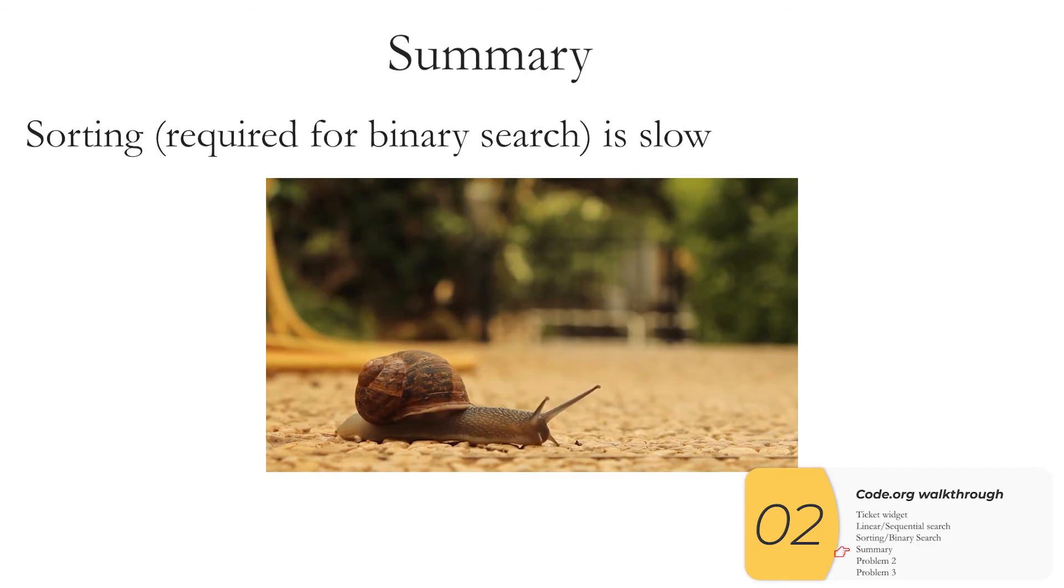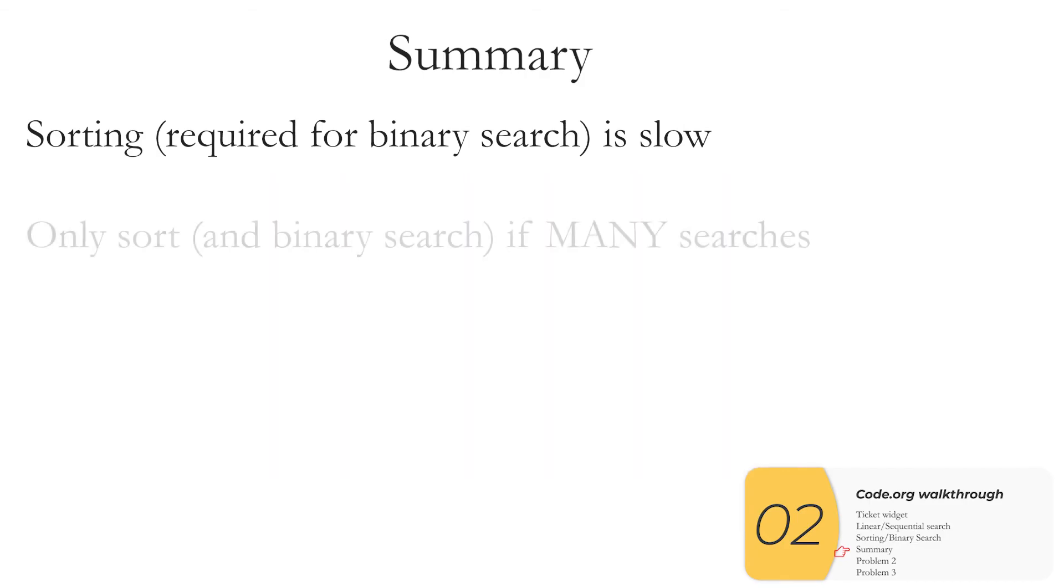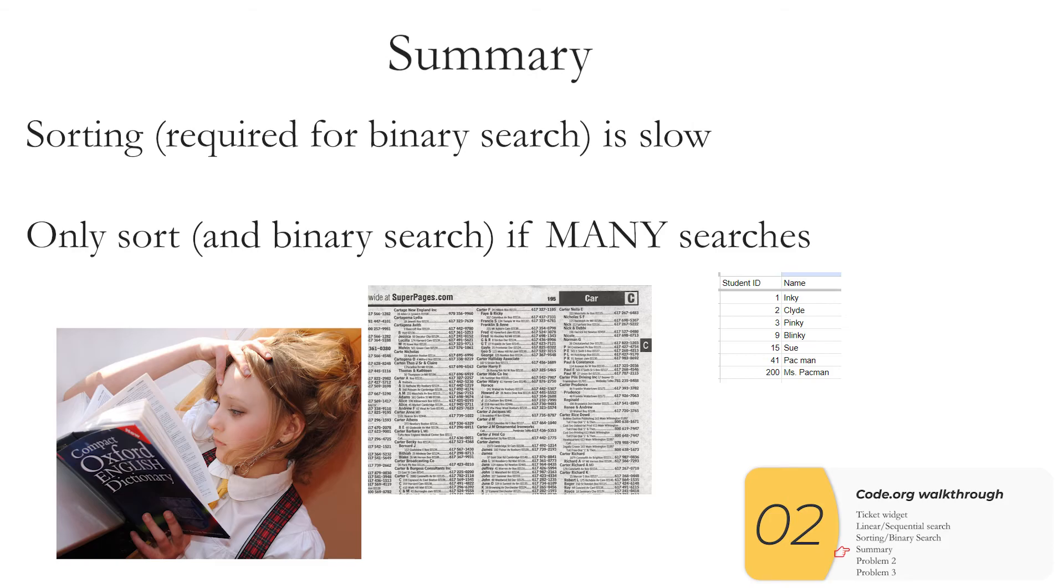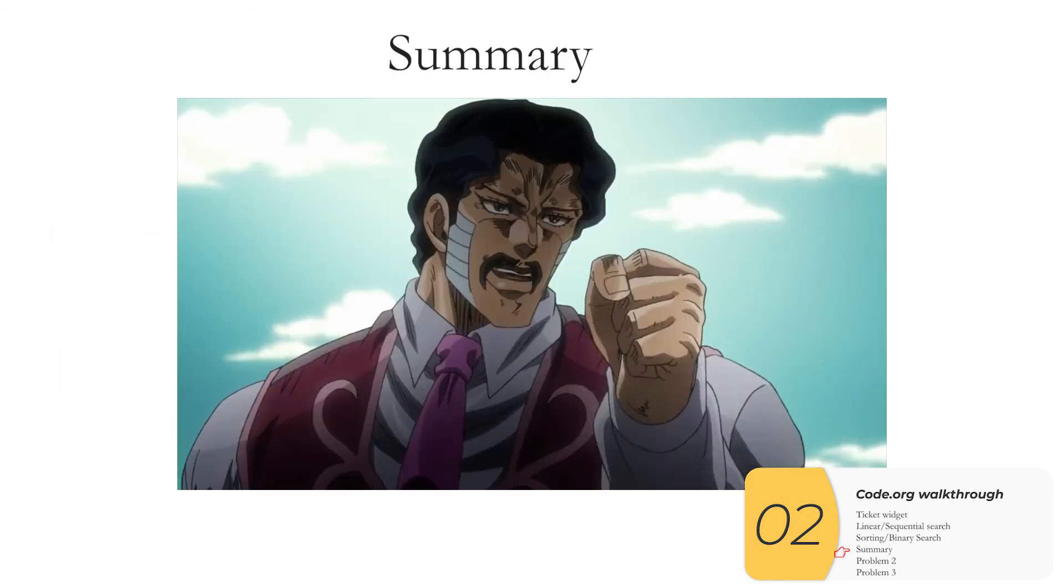Sorting is really really really slow so you're only going to sort and therefore do a binary search if you do many searches. On each search you gain a little bit of time and in the end that will overcome the amount of time or the amount of cost that you spend to sort. So something like a dictionary, a phone book, student IDs. These are things that you search a lot of times and in these cases it makes sense to spend all that cost to sort because you'll win that time back when you do many many many searches. Got it? Good.